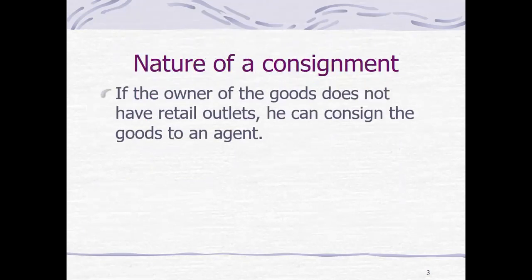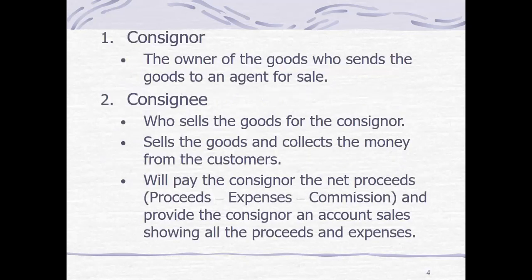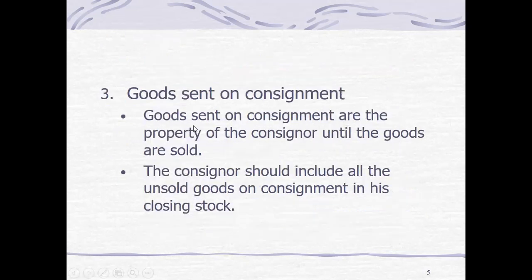Regarding the nature of a consignment, the owner of the goods consigned and delivered to the consignee is the consigner. The consignee is the agent and not the owner of the goods. If the owner of the goods does not have retail outlets, he can consign the goods to an agent to increase sales. The agent will sell the goods on behalf of the consigner and will get the commission. Goods sent on consignment are the property of the consigner until the goods are sold.